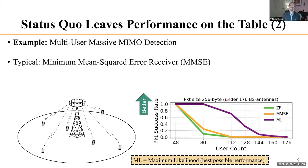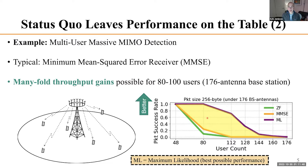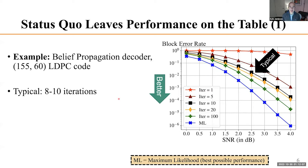There's plenty of room for throughput gains in terms of supporting more users, which would translate into higher spectral efficiency. This big yellow region represents the throughput gains possible if you go to maximum likelihood performance, which may well be achievable with some of the quantum computation techniques on the table.